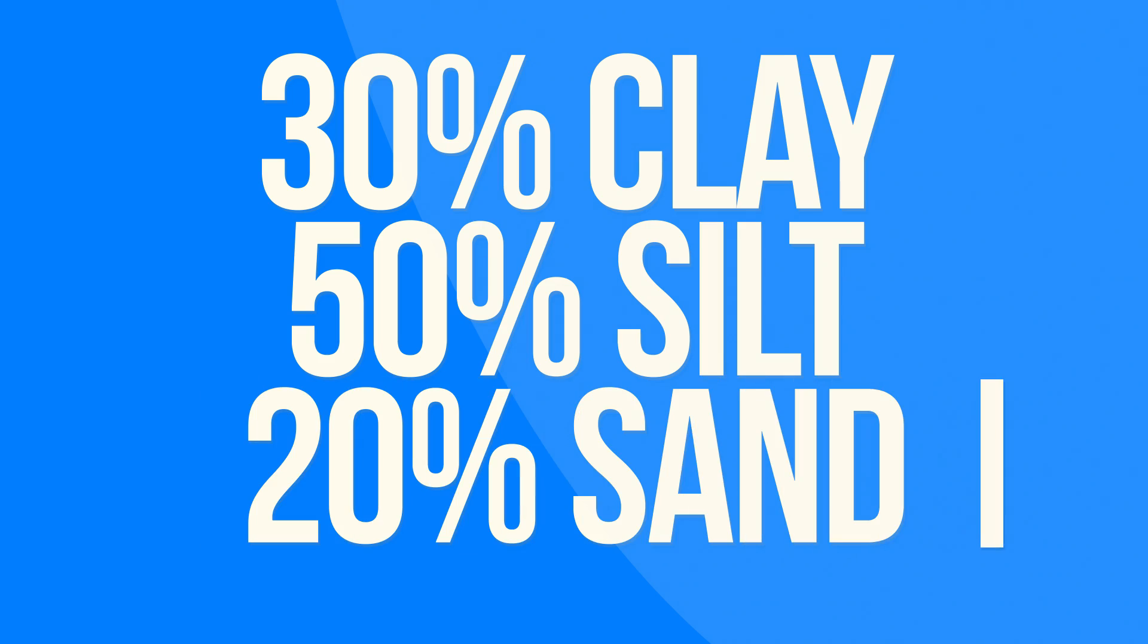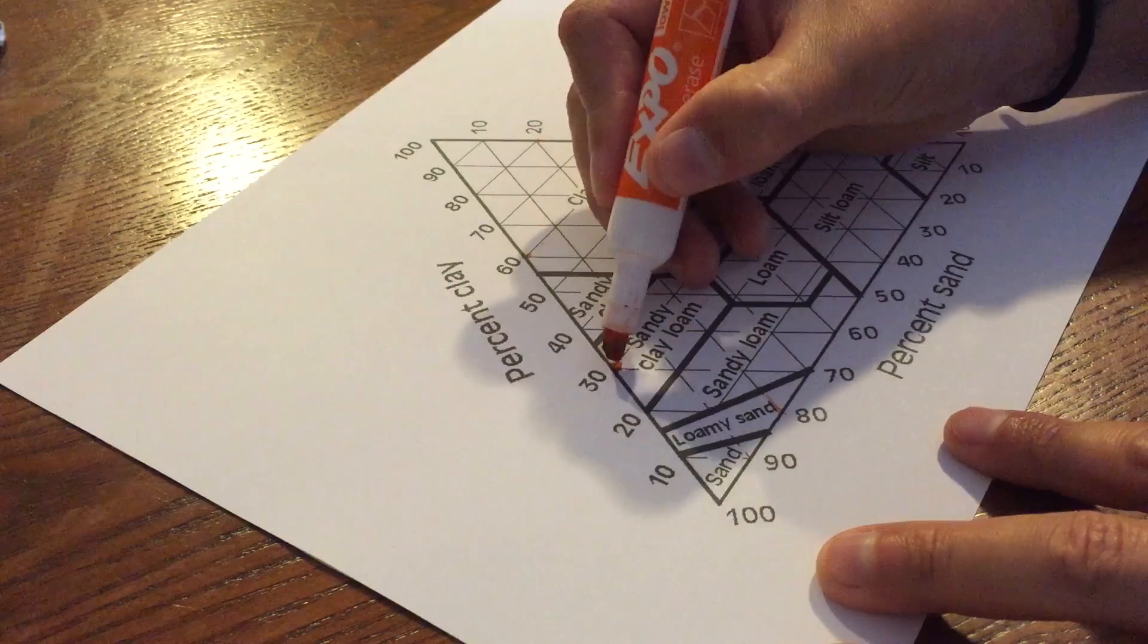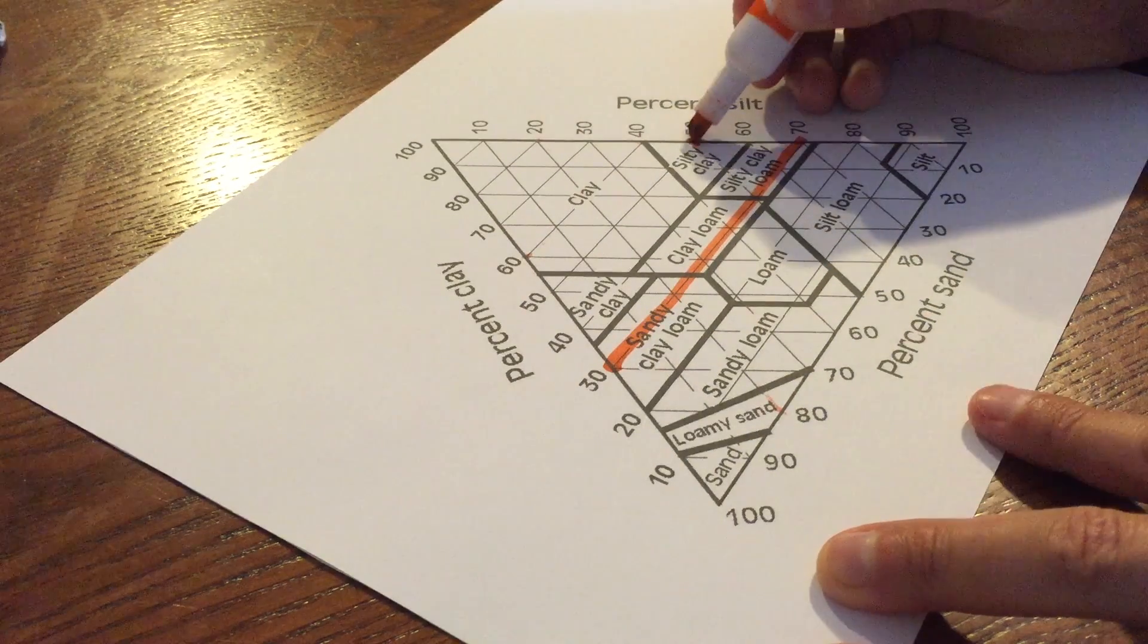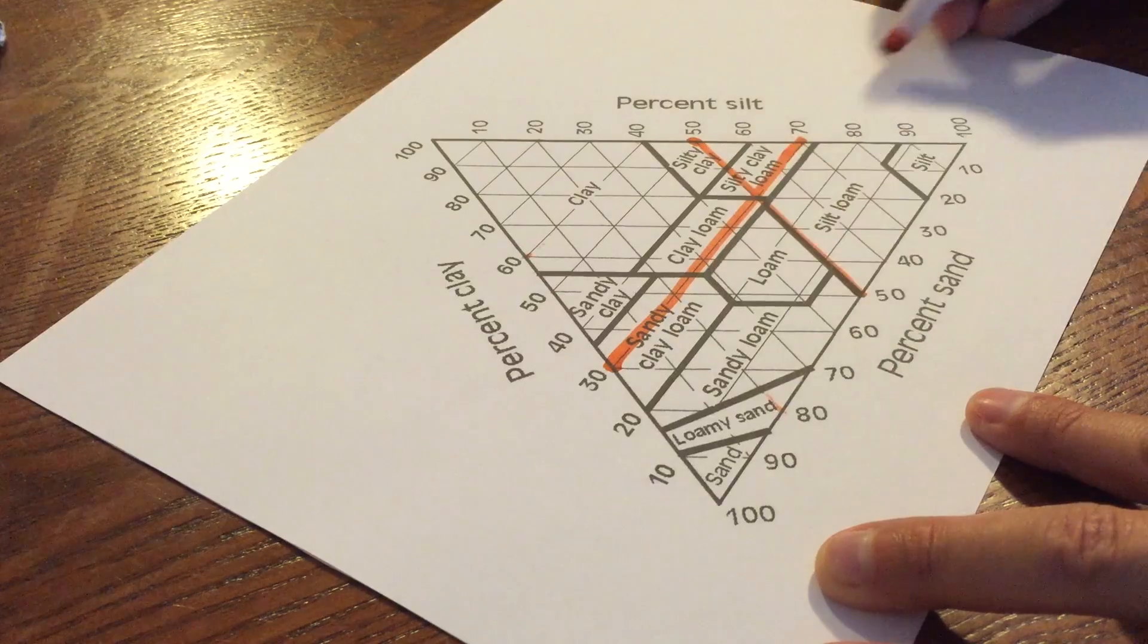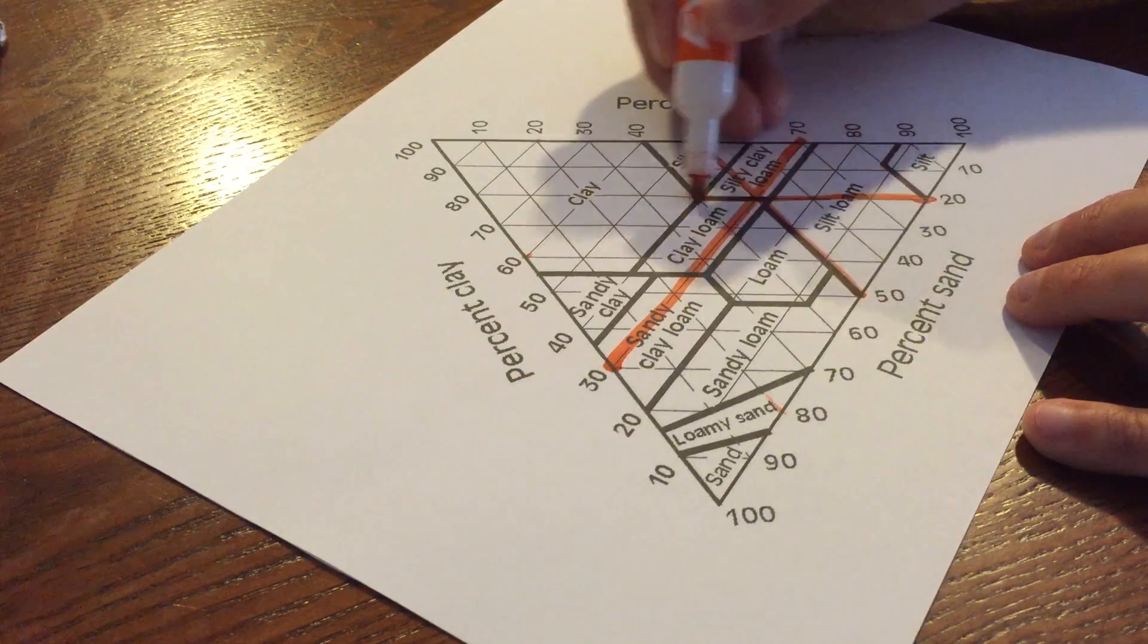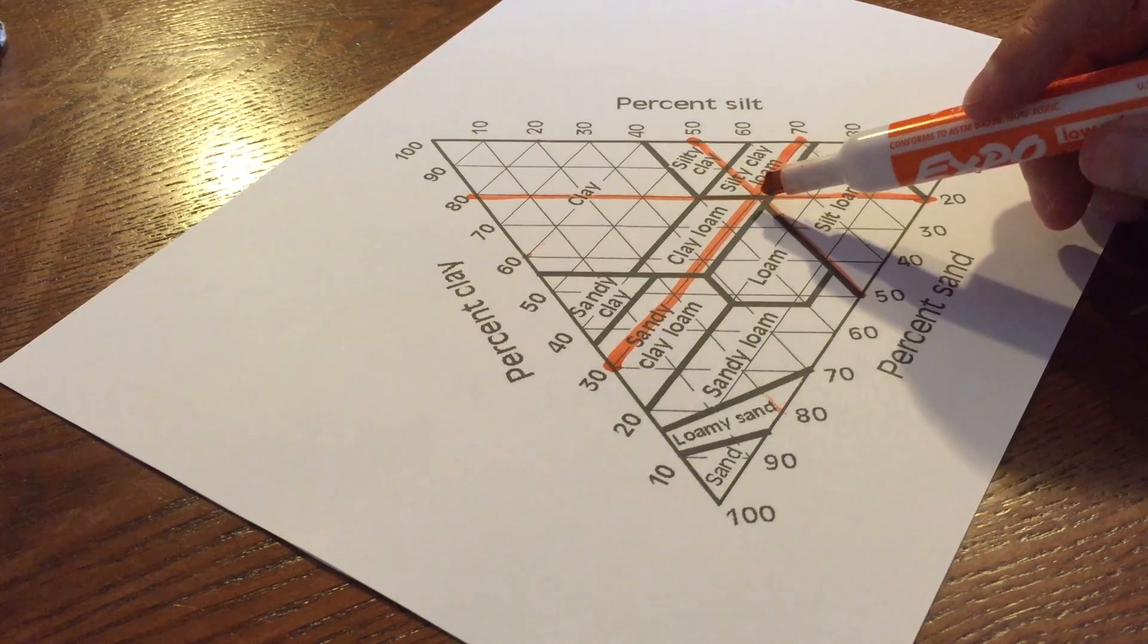So here we are, we're at the 30% clay and we'll come across like this. The 50% silt down, and the 20% sand, boom, right here.